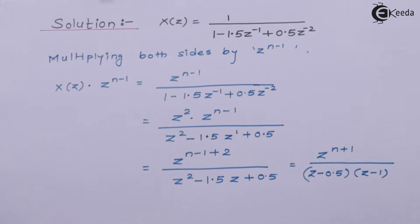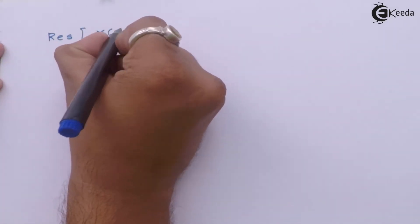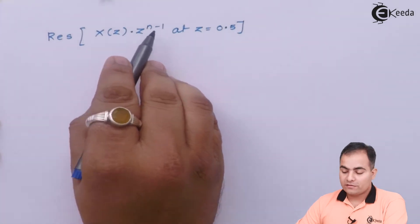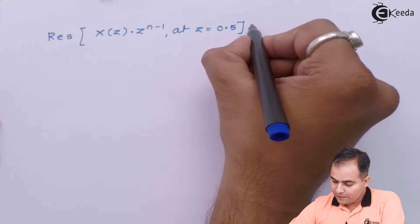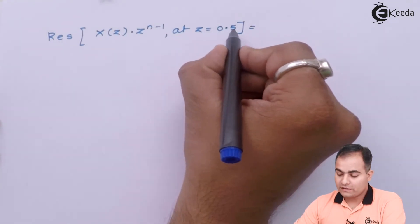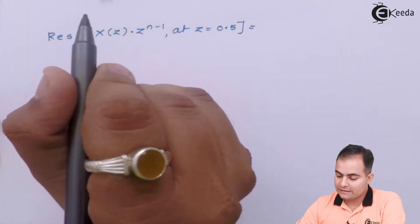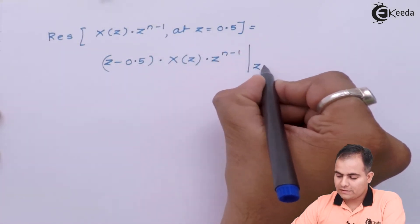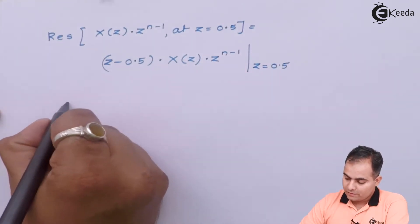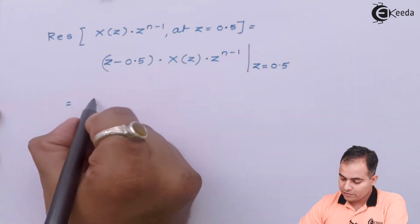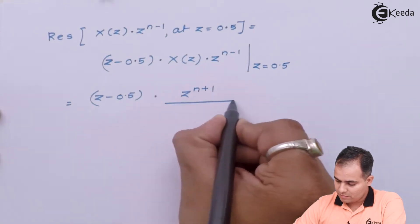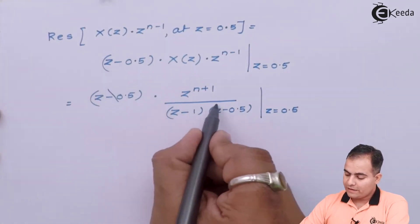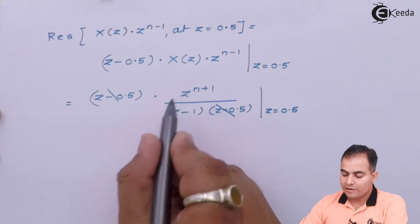Now we apply the residue theorem. To find the residue of X(Z)·Z^(n−1) at Z = 0.5, we multiply by (Z − 0.5) and substitute Z = 0.5. The (Z − 0.5) terms cancel, and we substitute Z = 0.5 into the numerator and denominator.